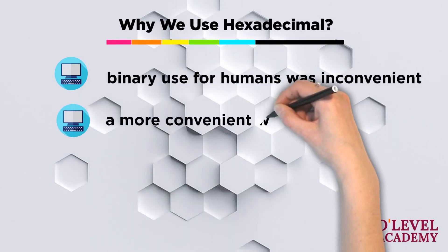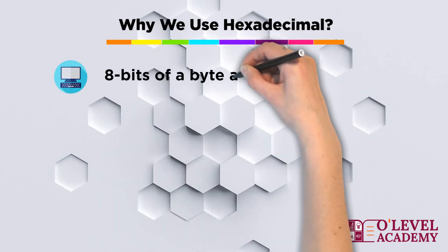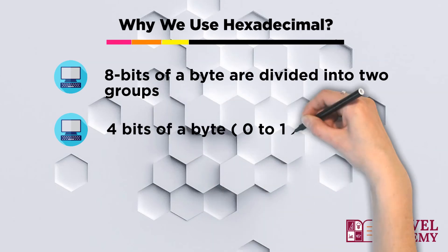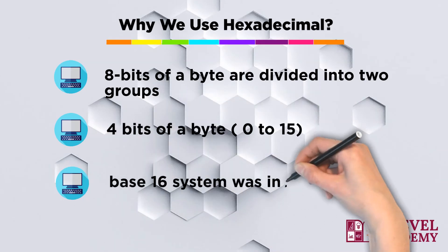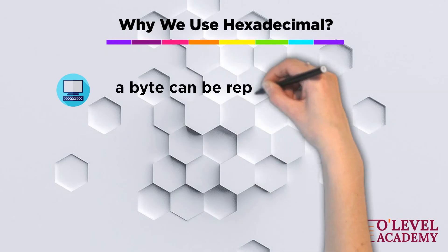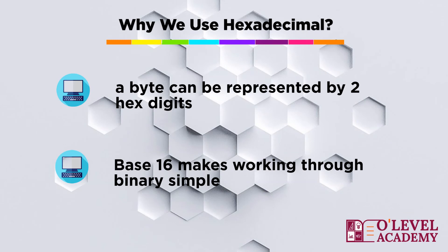A byte contains 8 bits and represents values 0 to 255. The 8 bits of a byte are divided into two groups, i.e. top 4 bits and low 4 bits. The 4 bits of a byte can give values from 0 to 15. Therefore, a base 16 number system was introduced. Using the base 16 representation, a byte can be represented by 2 hex digits instead of 8 bits. Working through a binary number with base 16 is much easier.